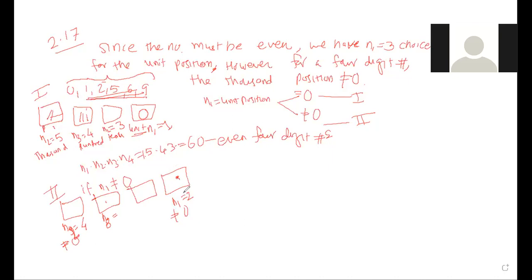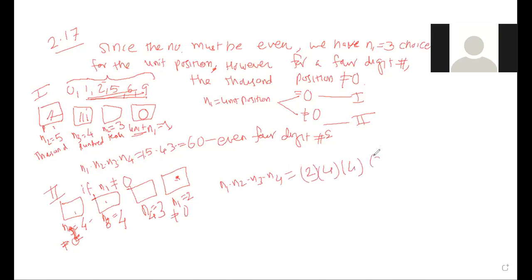Now consider permutations of two letters at a time from {A, B, C, D}: AB, AC, AD, BA, BC, BD, CA, CB, CD, DA, DB, DC — 12 possibilities. Using the multiplication rule: n1 = 4 choices for the first position, n2 = 3 choices for the second. So 4 × 3 = 12 permutations. In general, for n distinct objects taken r at a time, the number of arrangements is n × (n−1) × ... × (n−r+1).